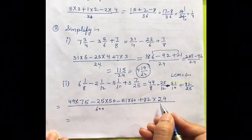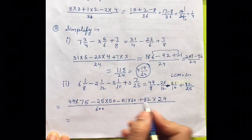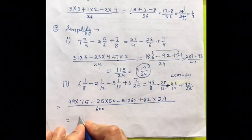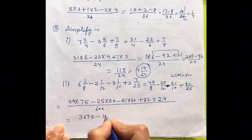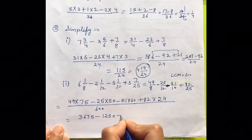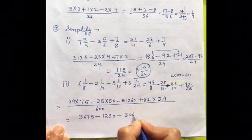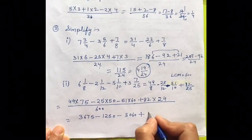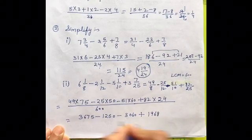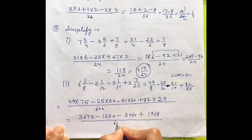So, this was the question. So, now, multiply these all. So, what we will get? We will get 3675 minus 1250 minus 3060 plus 1968 upon 600.